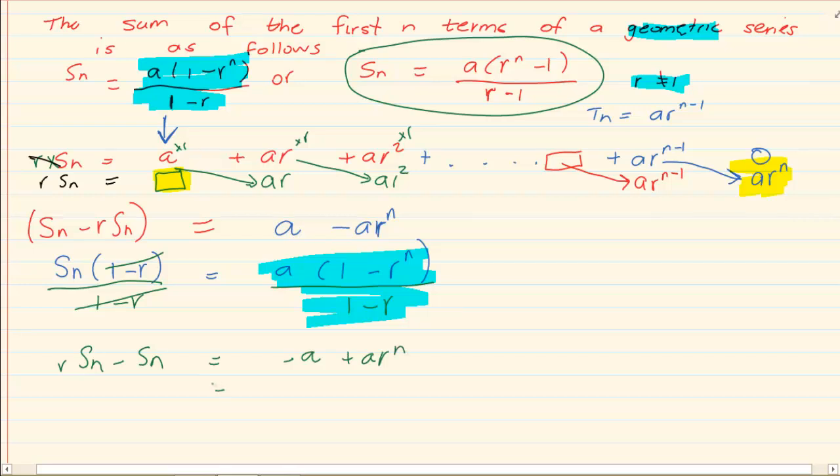Then we take out a common a and if you take out a common a you have r to the power of n minus 1 and here if you take out a common Sn we would have it as r minus 1. And then divide by r minus 1 divide by r minus 1 which will give us the second proof.